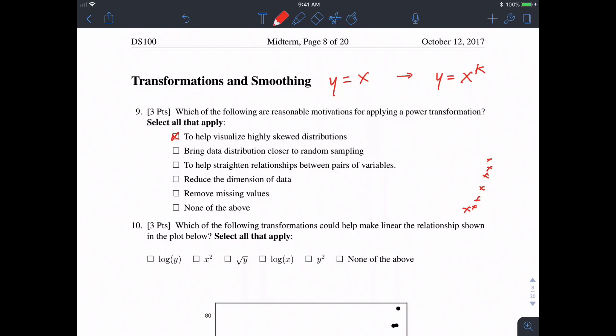But when we exponentiate our input values to some power, it might make it a little easier to visualize these linearly. Bring data distribution closer to random sampling—that doesn't really mean anything, sort of just a trick option put in there.